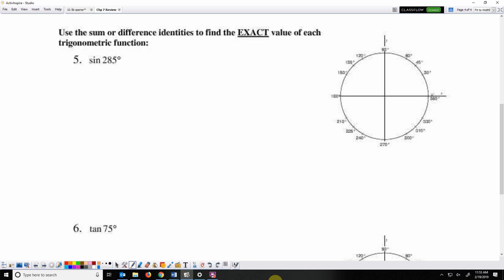So we'll continue our review with the sum and difference identity. We need to find the exact value of sine 285. 285 does not show up on our unit circle, but it can be expressed as sine of 150 plus 135.